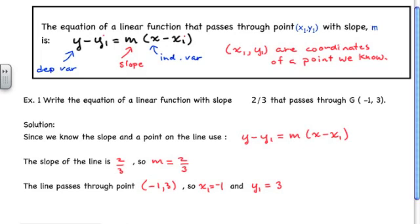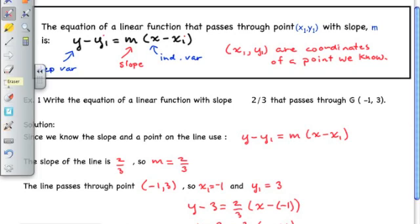We write our equation replacing y₁ with 3, m with 2/3, and x₁ with negative 1. Then we simplify by rewriting x minus negative 1 as x plus 1. That is the equation in slope-point form of a line that passes through the point negative 1 and 3 with a slope of 2/3.